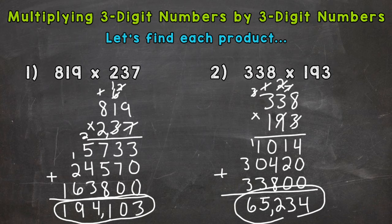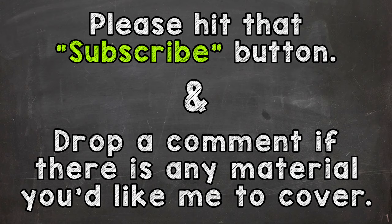So there you have it. That's how you multiply three-digit numbers by three-digit numbers. I hope that helped. Thanks so much for watching. Until next time, peace.